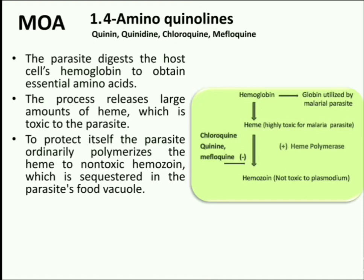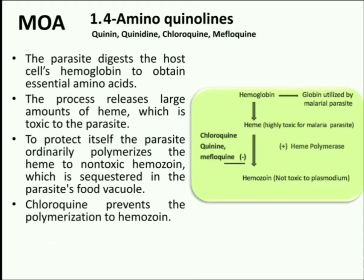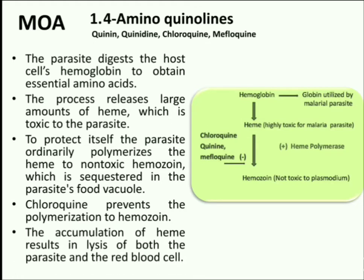To protect itself, the parasite ordinarily polymerizes the heme to a non-toxic hemozoin form, which is hidden away in the parasite's food vacuole. Chloroquine and other 4-Aminoquinoline derivatives prevent the polymerization of heme to the non-toxic hemozoin form, which results in the accumulation of heme. Accumulation of heme results in the lysis of both the parasite and the infected red blood cells.